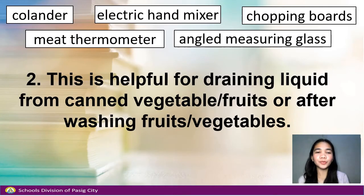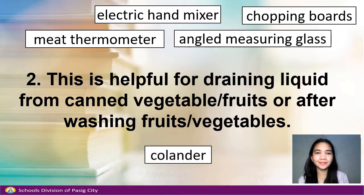Number 2. This is helpful for draining liquid from canned vegetables or fruits, or after washing fruits or vegetables. Answer: Colander.